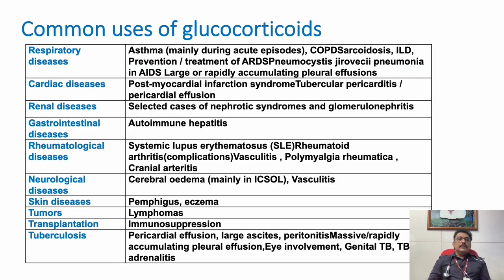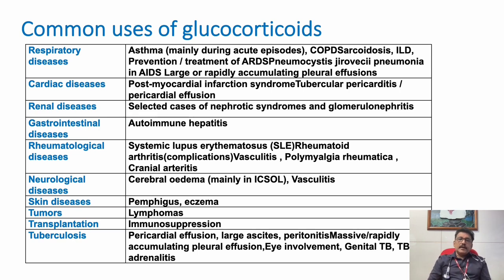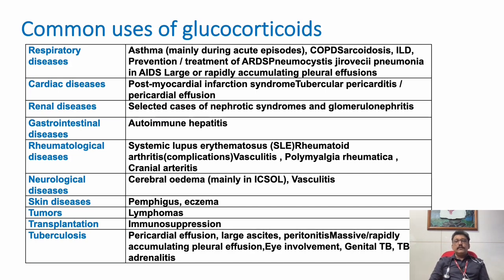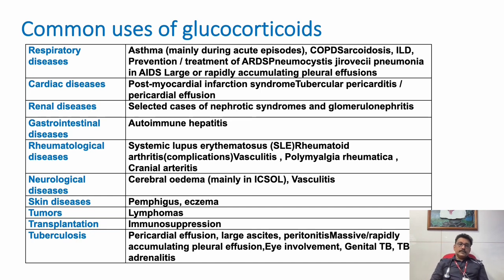The commonest use of steroid in clinical practice is in asthma. Any patient coming with acute severe asthma, we start with injection steroids or oral steroids. We have to understand that both injections and oral steroids have the same bioavailability, but in patients having breathing difficulty we cannot give oral tablets, so we start injections. Some patients are also treated with nebulized steroids like budesonide or inhaled steroids, which can also act as an anti-inflammatory drug.